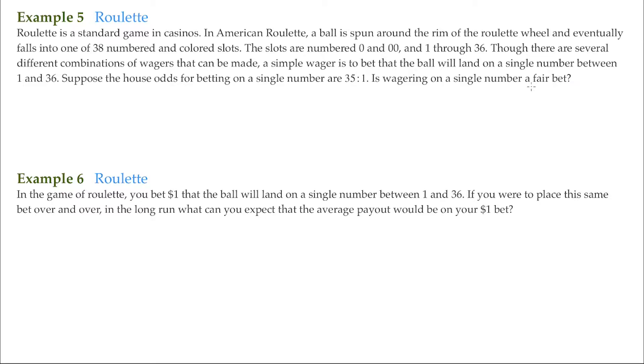So what is a fair bet? A fair bet is when the house odds, and according to this problem, which are 35 to 1, is the same as the true odds. And that's what we need to find. If they're the same, then it's a fair bet.